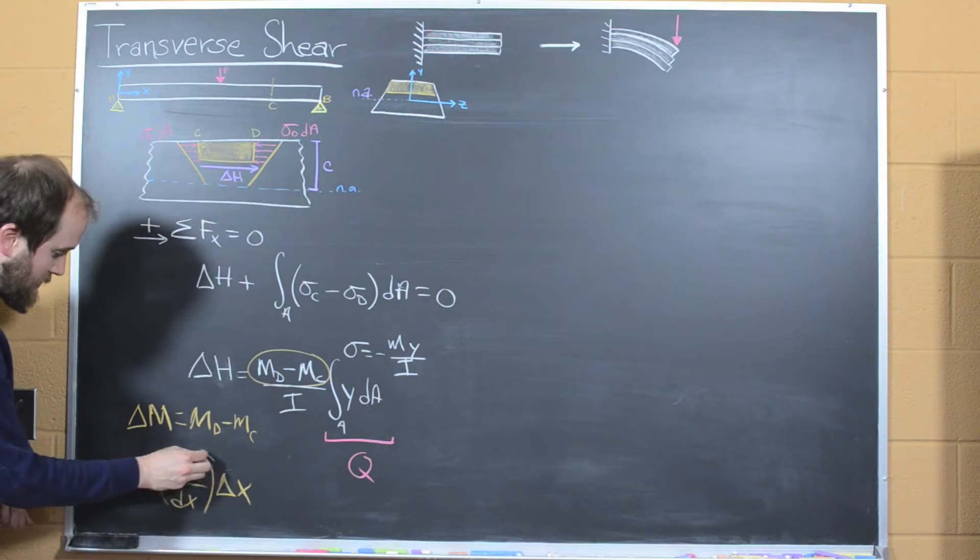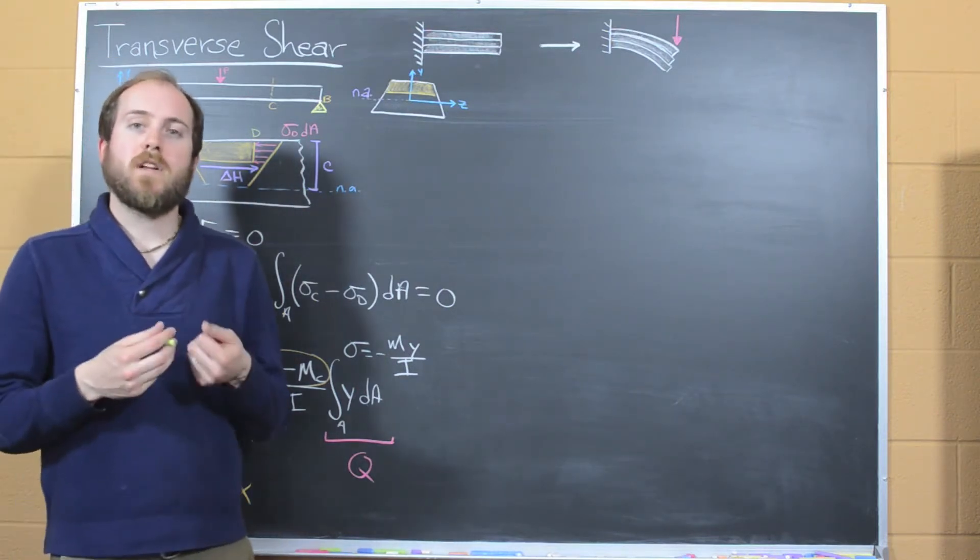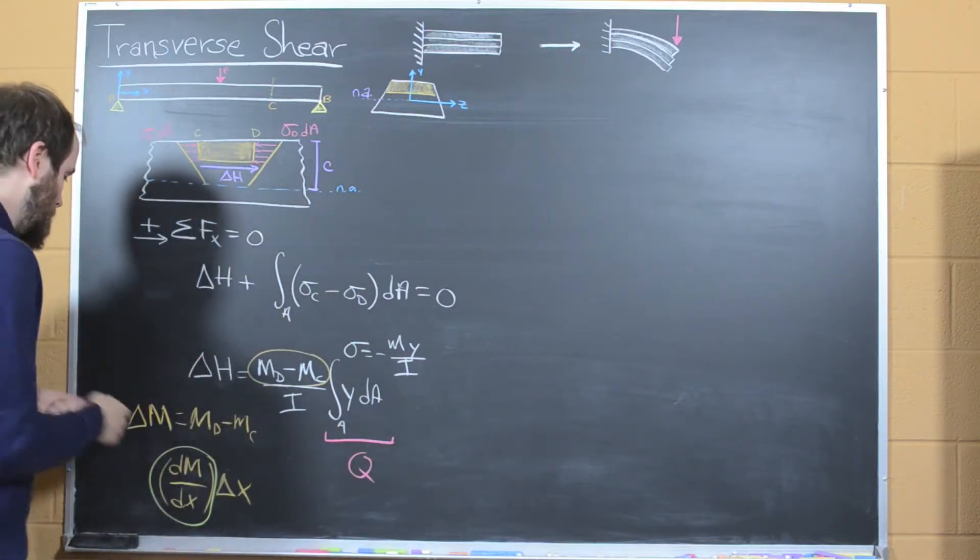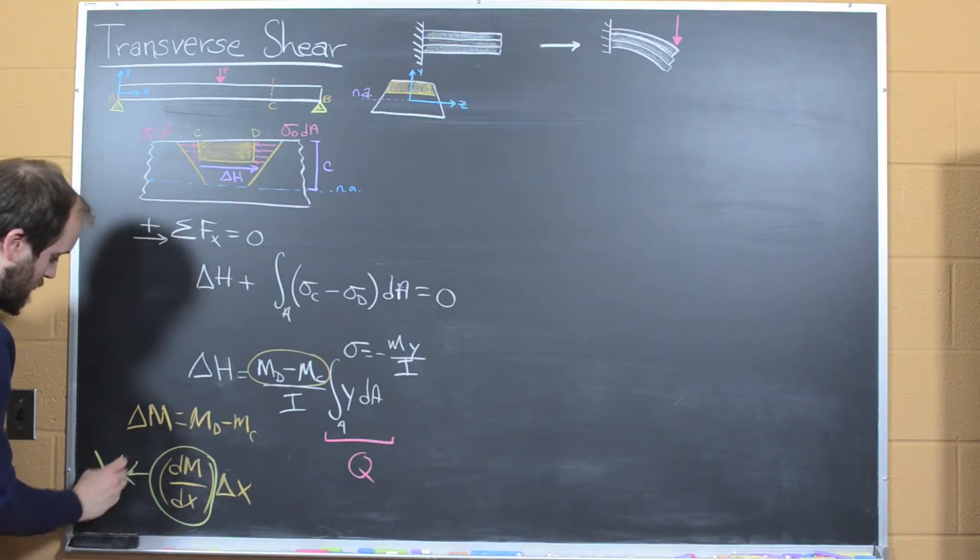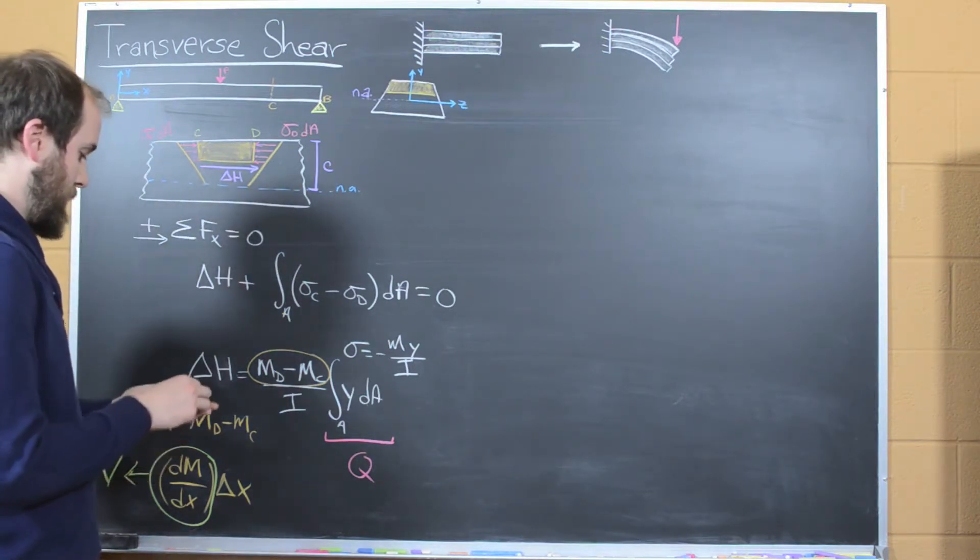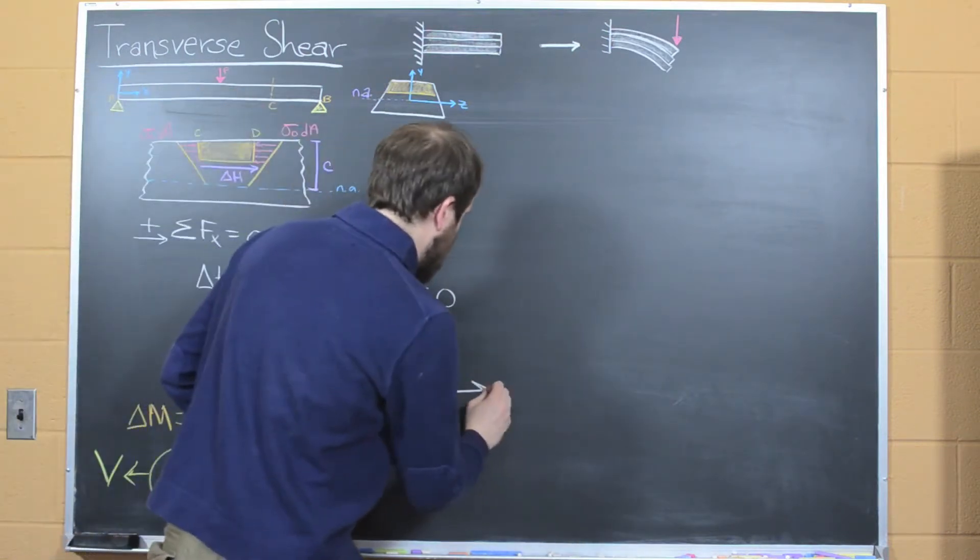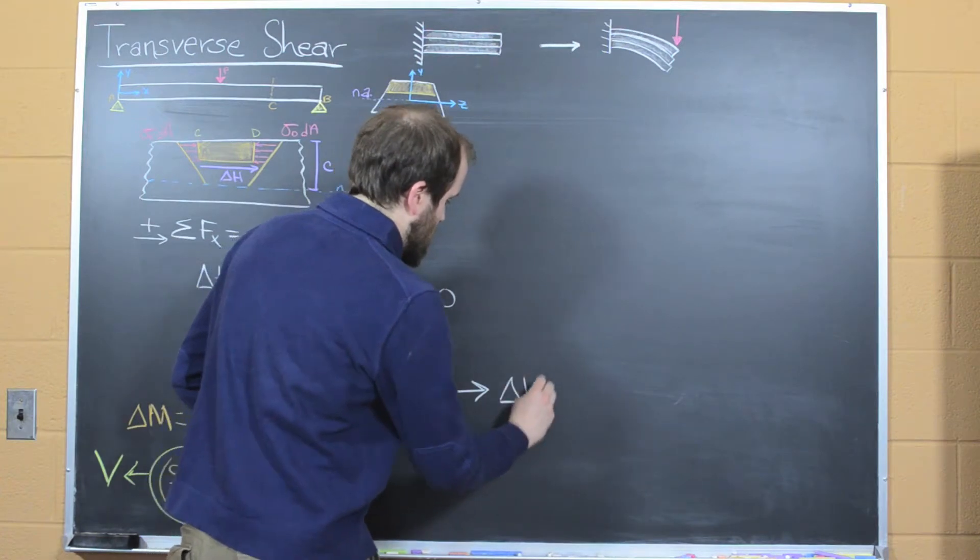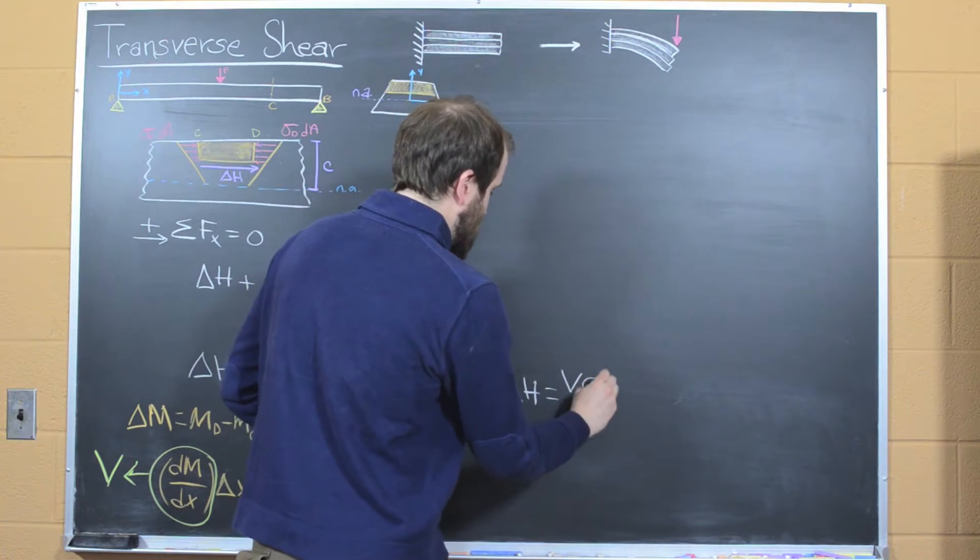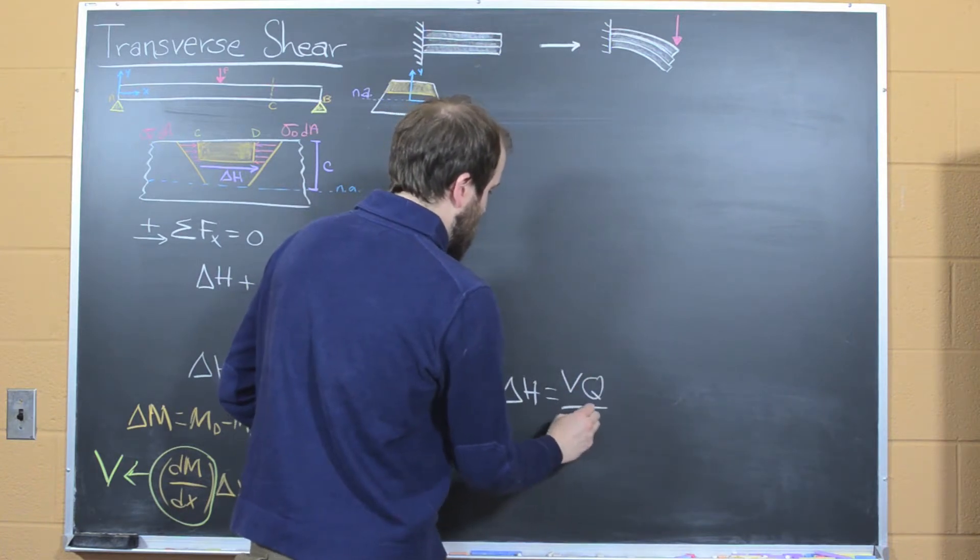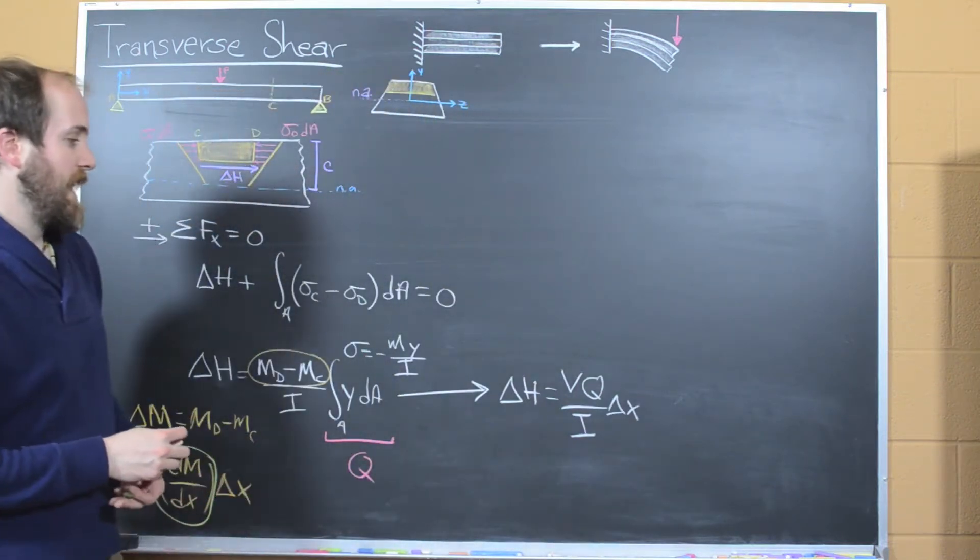We can replace our MD minus MC with this part of the equation here. What we want to recognize is that this term, this comes back from our differential relations that we learned in the previous lesson. This term here is equal to our shear force, V. Alright, so now we can start to simplify this. And so we end up with delta H is going to be equal to V times Q over I times the differential delta X.